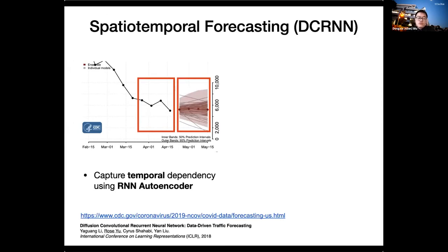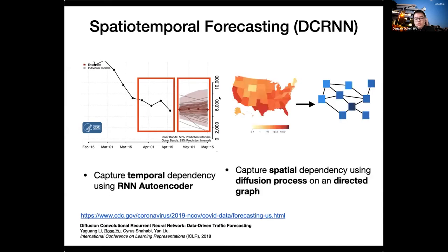A straightforward way to handle state-level predictions would be to train 50 models for all states, but that assumes every state is independent — a very strong assumption. In reality, people still travel during the pandemic, so we need to consider spatial dependencies. We capture these using a diffusion process on a directed graph. There will be 50 nodes in the graph for 50 states, each storing corresponding features. The edges represent the fraction of the population traveling from a source state to a target state, and the model is called DCRNN.